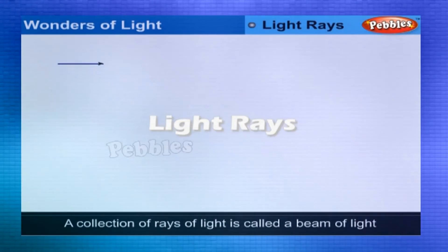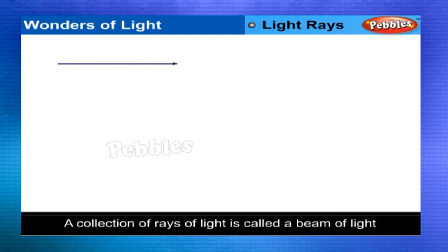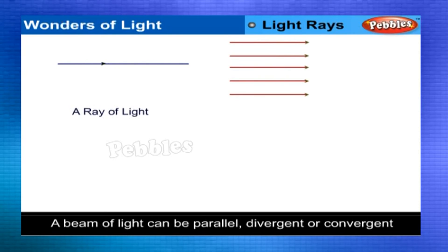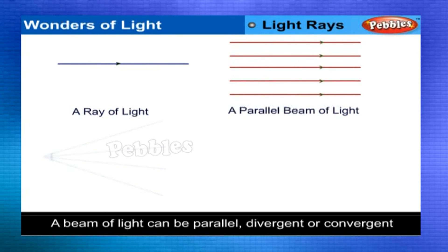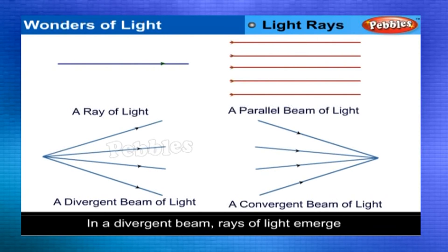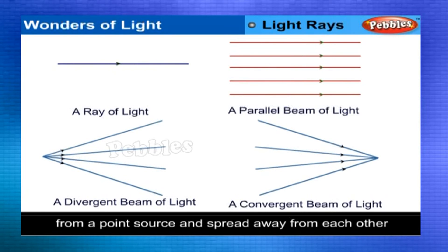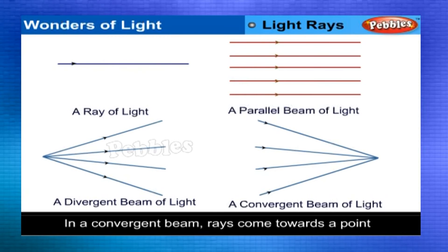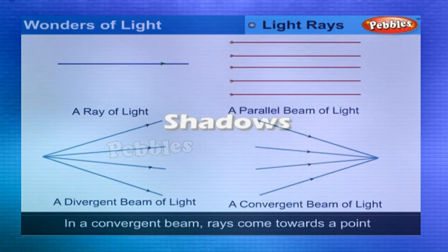Light rays: A collection of rays of light is called a beam of light. A beam of light can be parallel, divergent, or convergent. Rays of light reaching us from the sun are almost parallel to each other. In a divergent beam, rays of light emerge from a point source and spread away from each other. In a convergent beam, rays come towards a point.